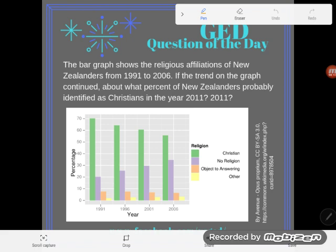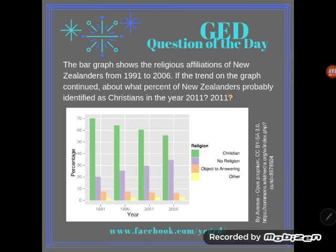It says: the bar graph shows the religious affiliations of New Zealanders from 1991 to 2006. If the trend on the graph continued, about what percent of New Zealanders probably identified as Christians in the year 2011?